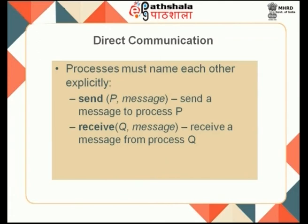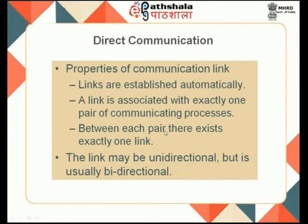For communication between two processes, you can have direct or indirect communication. In direct communication, the send operation explicitly names the destination process — for example, 'send to process P this message' or 'receive from process Q this message.' In this kind of direct communication, a link is established automatically and is associated with exactly one pair of communicating processes. Between A and B there is one and only one link, and the link can be unidirectional or bidirectional.